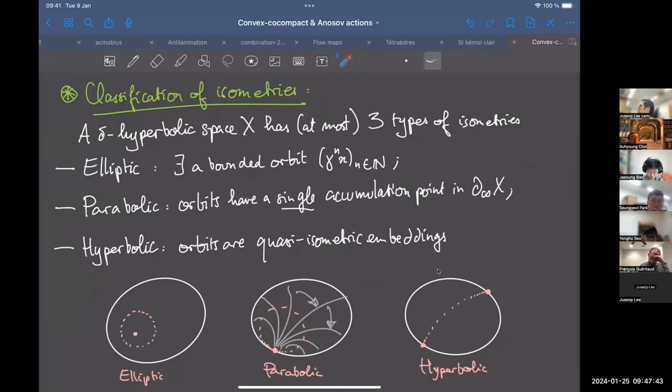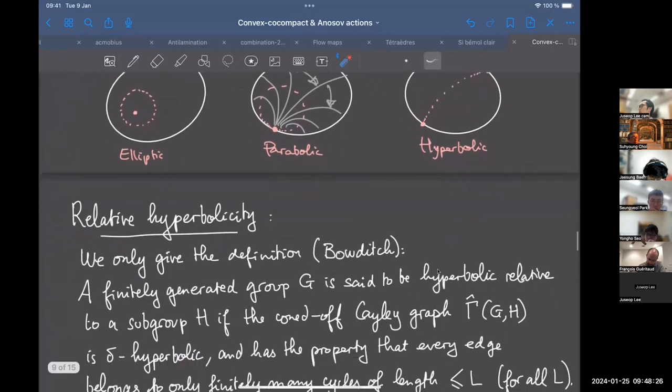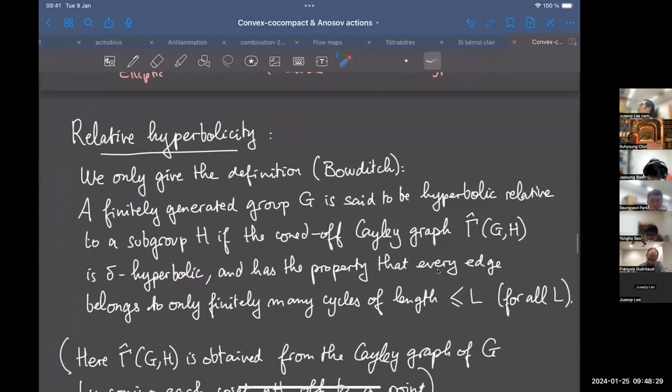So if you think about the orbital behavior of these, you can convince yourself that any point goes to the same limit point whether you iterate forward or backward. So that's all parabolic. And it turns out that the only remaining case, if you're in neither of these two cases, then it turns out that the only possibility is that you have two fixed points and you translate by a constant amount along the geodesic connecting them. So in that case, orbits are quasi-isometric embeddings. If you take an orbit point, then the distance between γ^{-n}x and γ^{+n}x is on the order of log n, whereas here it grows linearly.